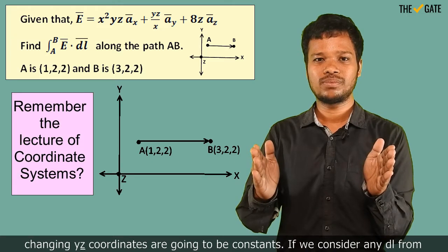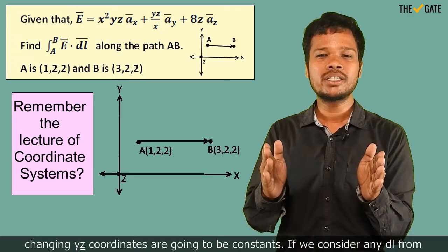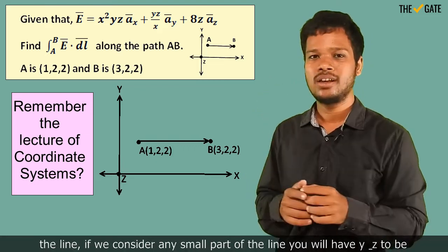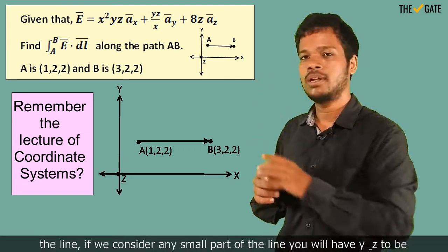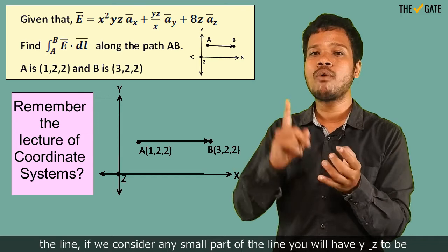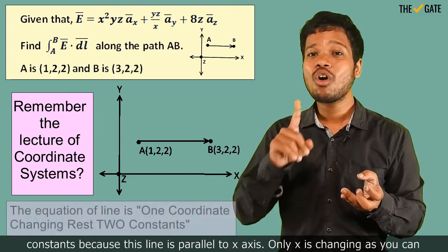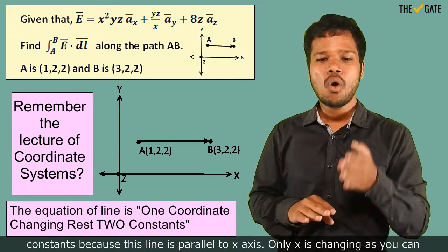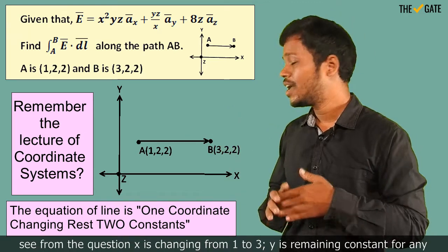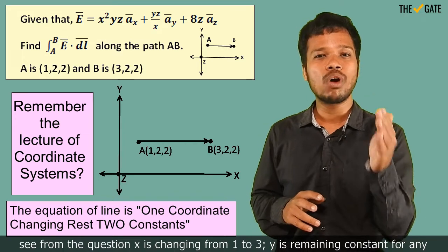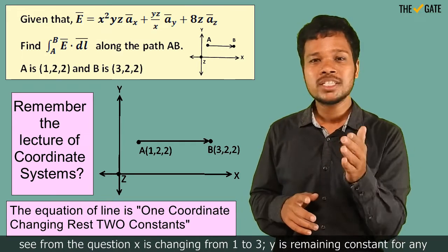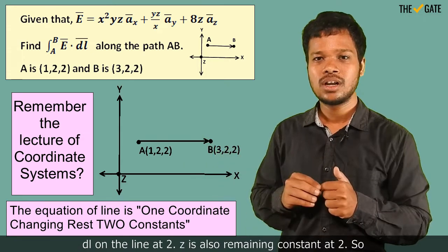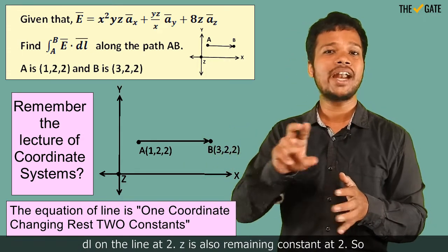y and z coordinates are going to be constant. If we consider any dl from the line, any small part of the line, you will have y and z to be constants because this line is parallel to the x-axis. Only x is changing. As you can see from the question, x is changing from 1 to 3. y is remaining constant at 2, and z is also remaining constant at 2.